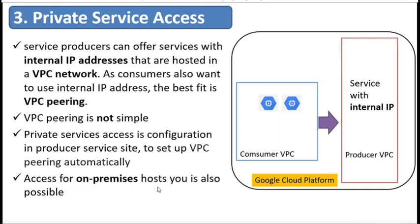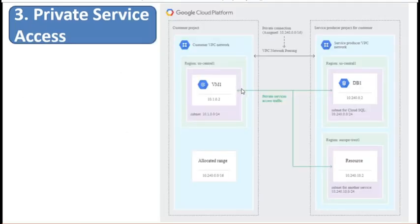Access from on-prem, which connects to the VPC via a VPN tunnel or Interconnect, is also possible. Don't forget to export the custom routes of the on-prem to the producer VPC. On the left is the customer VPC network and on the right is the producer. Within the customer VPC, we have VM1 with an internal IP address. On the producer side, when creating an instance of Cloud SQL, there is a configuration to select the internal IP, which automatically generates the VPC network peering between the two VPCs, allowing private access traffic without any further route exchange configuration.